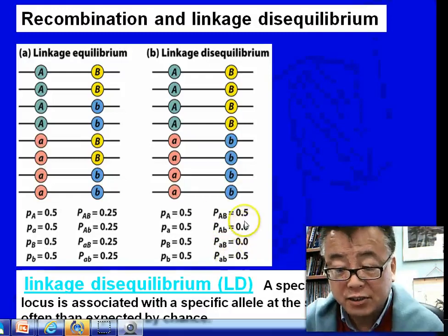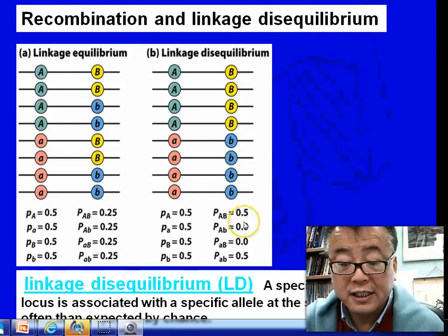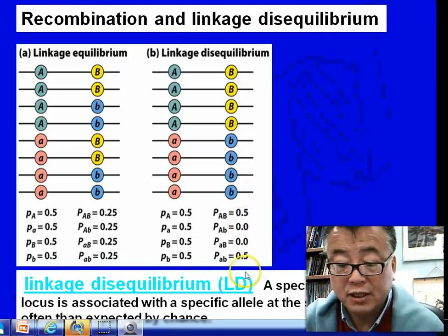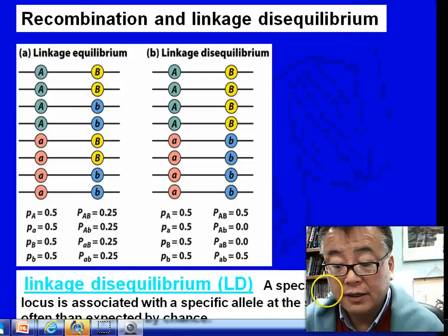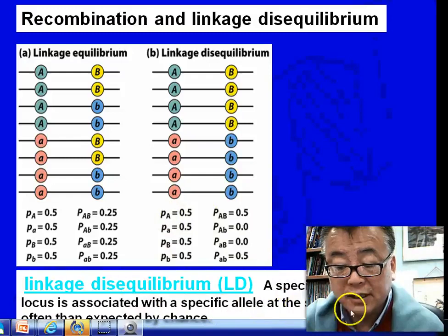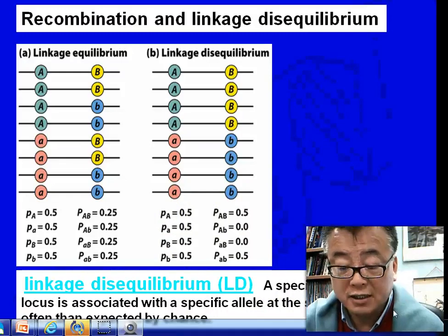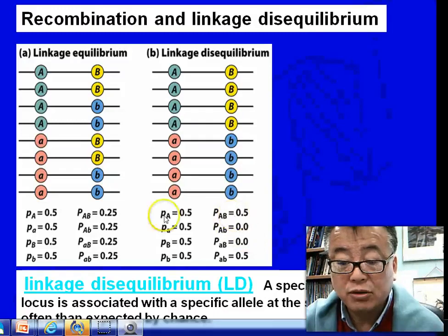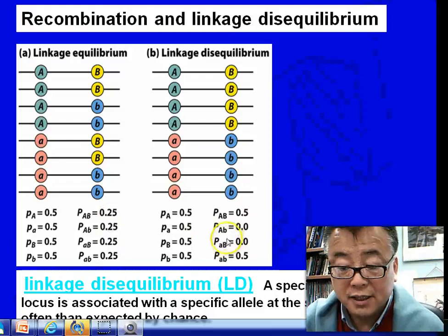In this situation we call it linkage disequilibrium — LD. A specific allele at the first locus, the A locus, is associated with a specific allele at the second locus, B, more often than expected by chance. So bigger A, bigger B is much more than one-quarter, while bigger A, small b has 0 — much less than one-quarter.